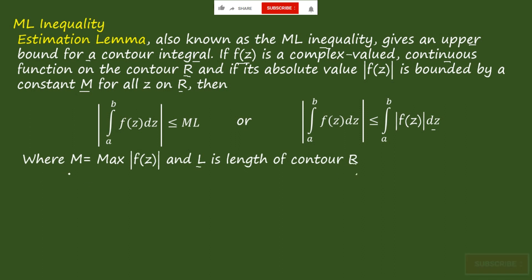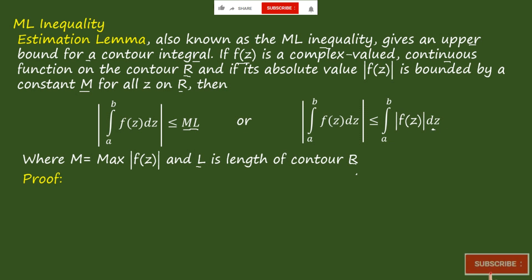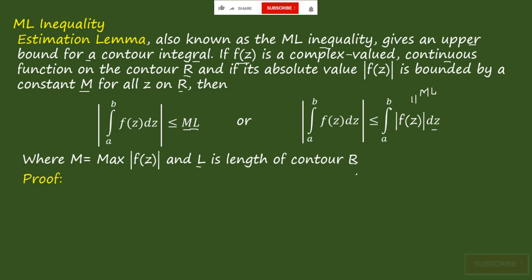Now we will prove this. Consider the first term: we can see that it is M·L, and here it is the integral from a to b of |f(z)| dz. We will try to prove how M·L equals the integral from a to b of |f(z)| dz.